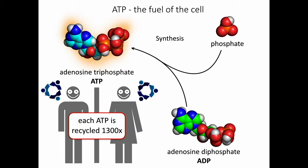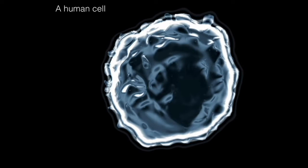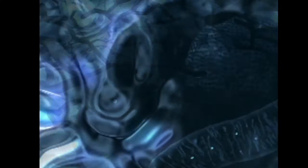But where does this happen? For that, we need to take a closer look at the human cell. Each human cell has to synthesize its own ATP supply. Let's have a look inside to see where that happens.